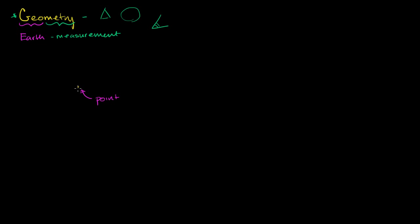Now what's interesting about a point is that it is just a position. You can't move on a point. If you were at this point and you moved in any direction at all, you would no longer be at that point. Now there are differences between points. For example, that's one point there, maybe I have another point over here, and then another point over here, and another point over there.